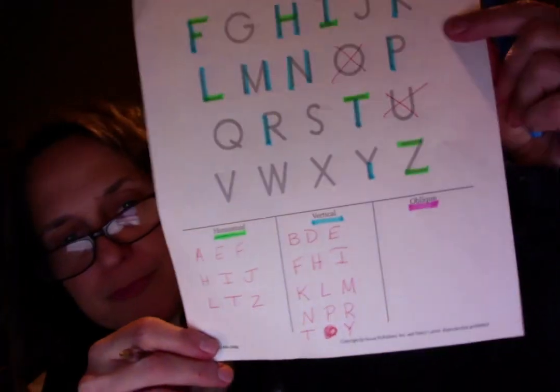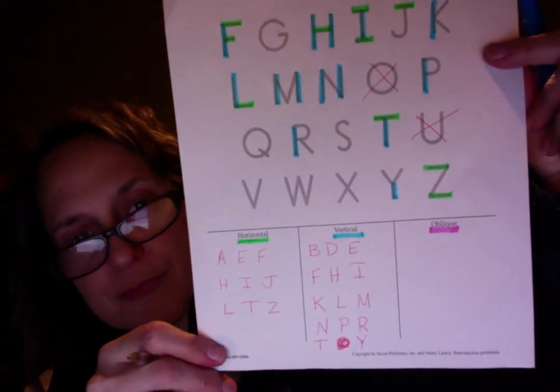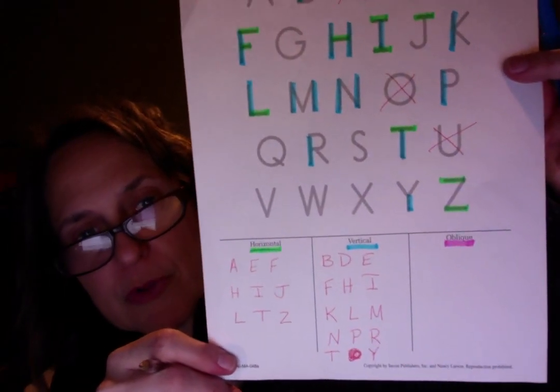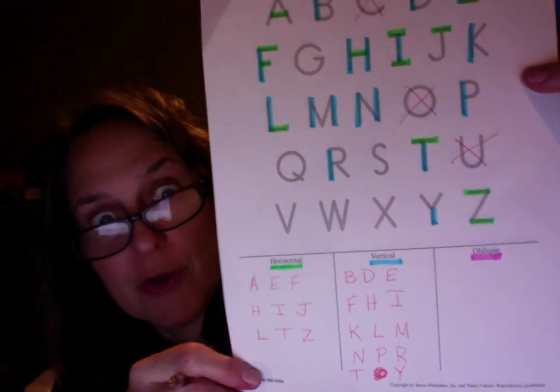I said Y and wrote a Z by mistake. Okay, there we go. So there are a lot of letters with vertical lines.